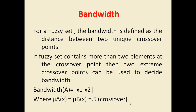Bandwidth is the distance between two unique crossover points. It is possible that there are more than two crossover points. In that case, we will choose the two extreme crossover points and take the distance between them. That distance will be called the bandwidth of that fuzzy set.